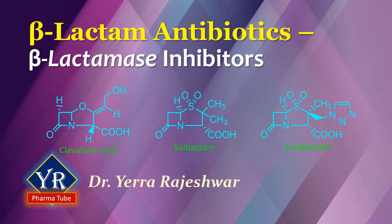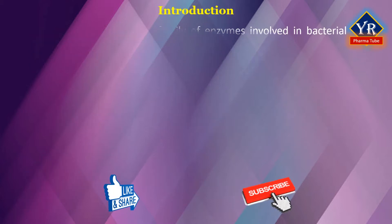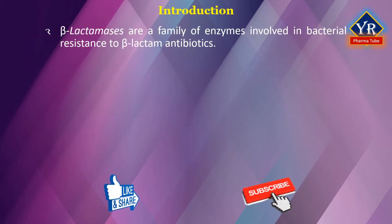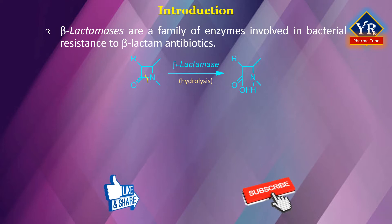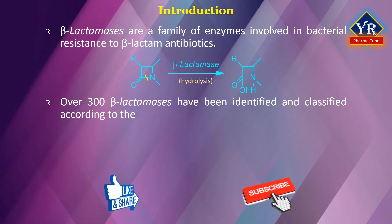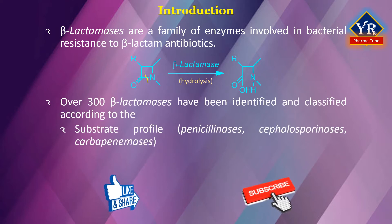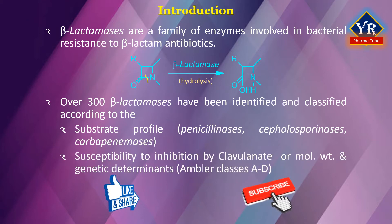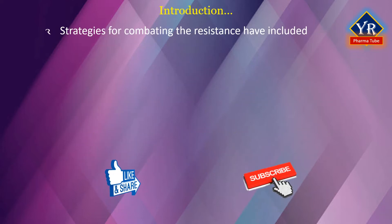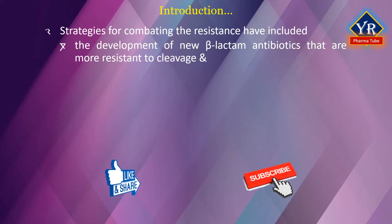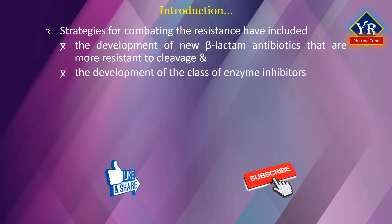In this lesson, we shall discuss beta-lactamase inhibitors. Beta-lactamases are a family of enzymes involved in bacterial resistance to beta-lactam antibiotics. They hydrolyze the amide bond in the beta-lactam ring and prevent the active drug from reaching the target penicillin-binding proteins. Over 340 beta-lactamases have been described and are classified according to their substrate profile and susceptibility to inhibition by clavulanic acid, or by molecular weight and genetic determinants. Strategies for combating this form of resistance have included the development of new beta-lactam antibiotics that are more resistant to cleavage and the development of a class of enzyme inhibitors called beta-lactamase inhibitors.